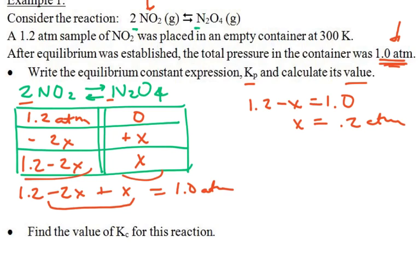1.2 minus X equals 1.0. So obviously X here must equal 0.2 atmospheres. So that means as far as our values, this is equal to 0.2. This is 1.2 minus 2X, so that's going to be 0.8 atmospheres.